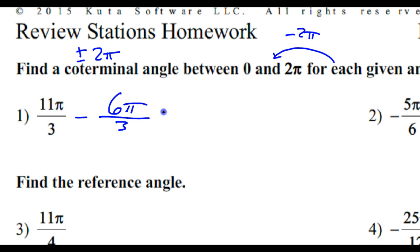Anyway, 11π minus 6π, that's going to be 5π. So 5π over 3 is going to be my coterminal angle.